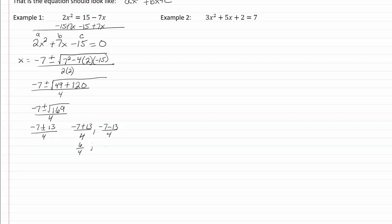Negative 7 minus 13 will give me negative 20 over 4. Those will both simplify to 3 halves and negative 5, and I'm done.